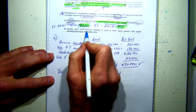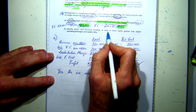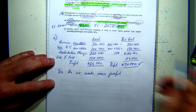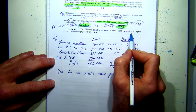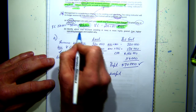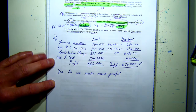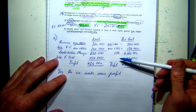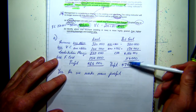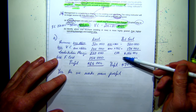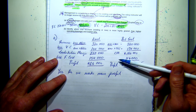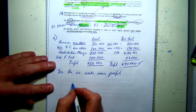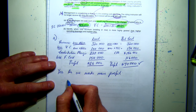Question B says: identify which cost structure, existing or new, is more highly geared. When we look at this, we talk about what has a higher operating leverage and explain why. When we look at higher operating leverage, we're looking at the proportion of fixed costs in relation to total costs. That's what operating leverage looks at - fixed costs in relation to total costs.